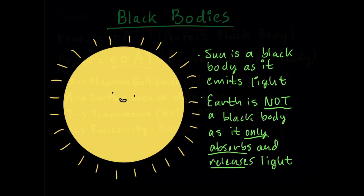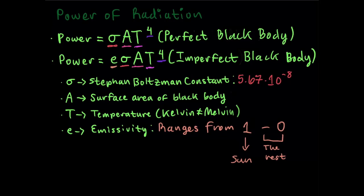So there's different powers for each type of black body, one for the perfect and one for the imperfect. The perfect black body is σAT^4, while an imperfect black body is εσAT^4. Where σ is the Stefan-Boltzmann constant, which is equivalent to 5.67 × 10^-8.